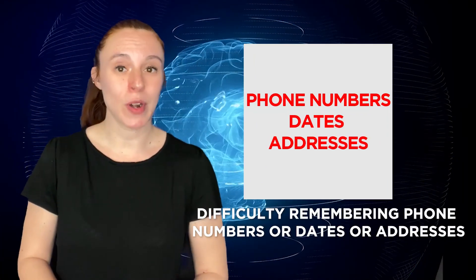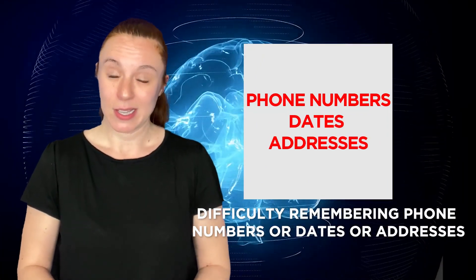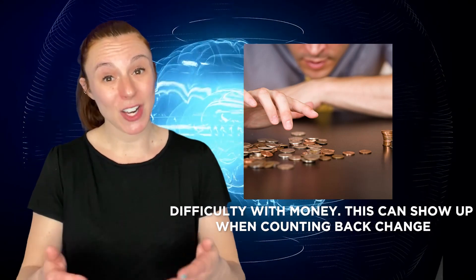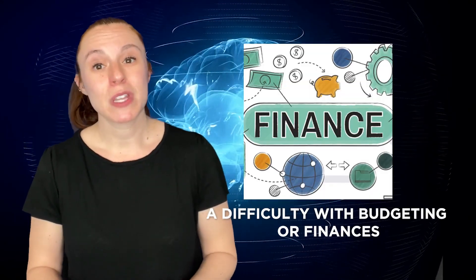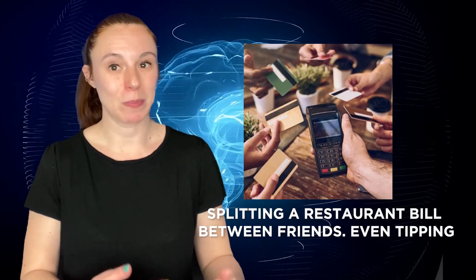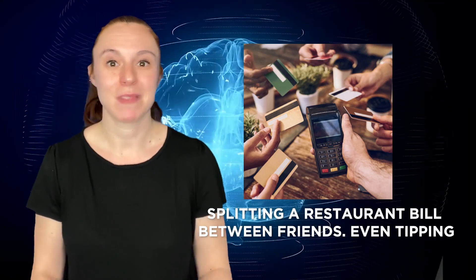Difficulty remembering phone numbers or dates or addresses. Difficulty with money. This can show up when counting back change, or a difficulty with budgeting or finances, or splitting a restaurant bill between friends. Even tipping.